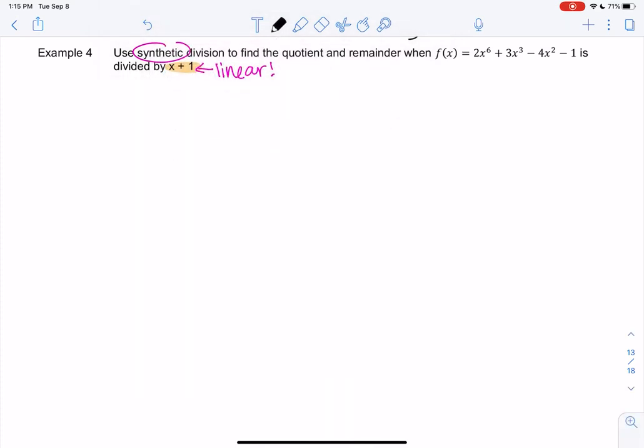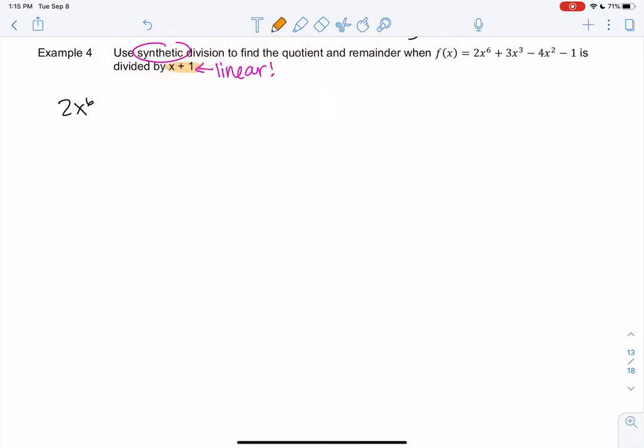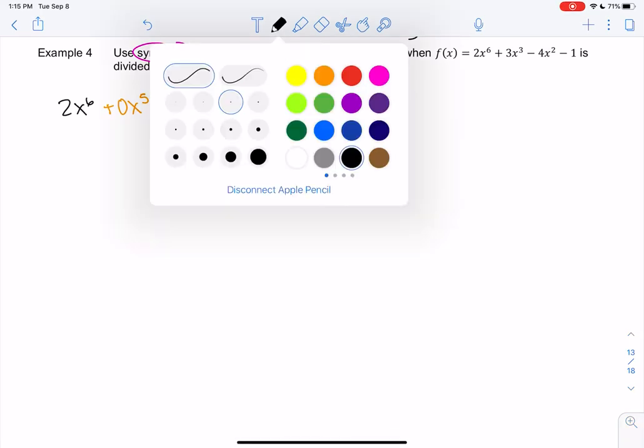So I'm going to add the missing terms to the top one first. So 2x to the 6th, we're missing x to the 5th, so 0x to the 5th. We're missing x to the 4th, so 0x to the 4th. We have the cube term. We have the square term. And we have a constant term, so we're missing the x term.